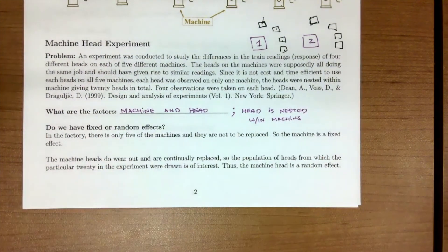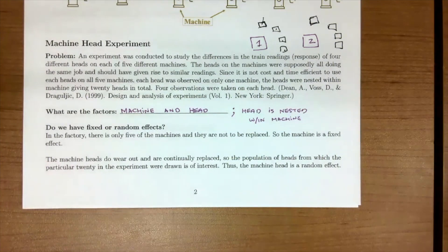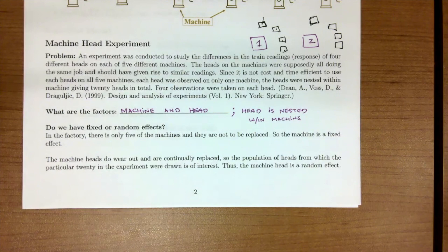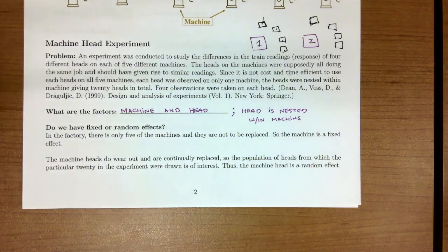We also want to identify if there's a fixed or random effect. In this factory there are only five machines that they are not replacing, so the machine is a fixed effect. The machine heads do wear out and are continually replaced, so we're curious about the population of heads from which the particular 20 in this experiment were drawn. Therefore, machine head is a random effect. Our next lesson is going to be focused on the nested design model, the ANOVA, and then how to do this example in JMP and R.